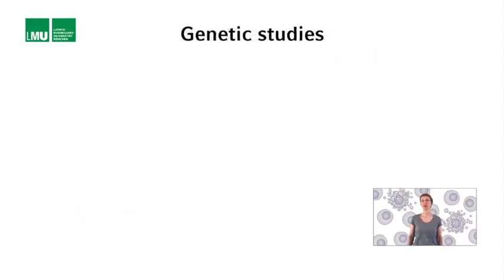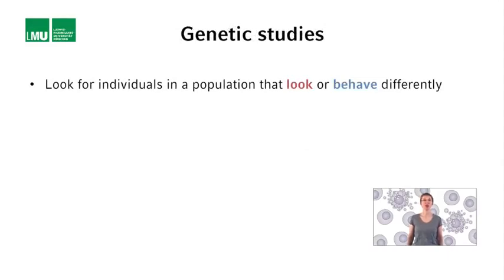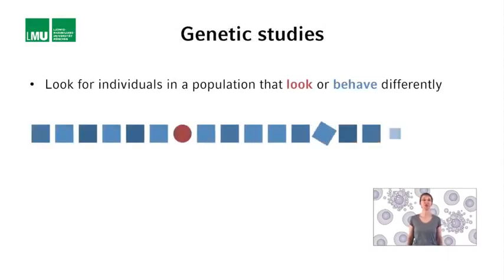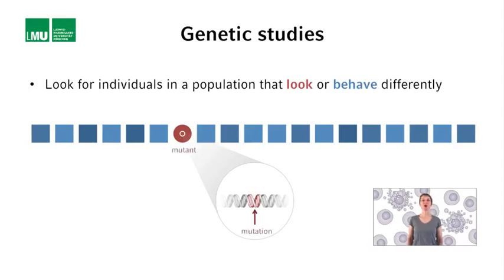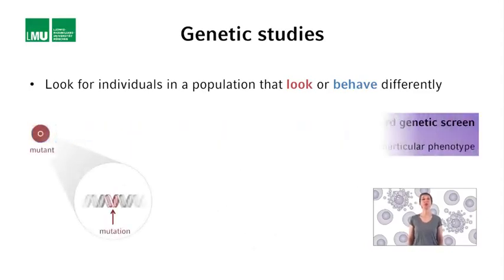Genetic studies involve the identification of individuals within a population that look or behave differently than the rest of the population — that exhibit a mutant phenotype. The individuals that exhibit this mutant phenotype are referred to as mutants. Mutant phenotypes are often caused by single changes in the DNA of the mutant, and these changes are referred to as mutations. Once a mutant with an interesting phenotype has been identified, using various genetic methods one can trace back this phenotype to the gene affected by the mutation.